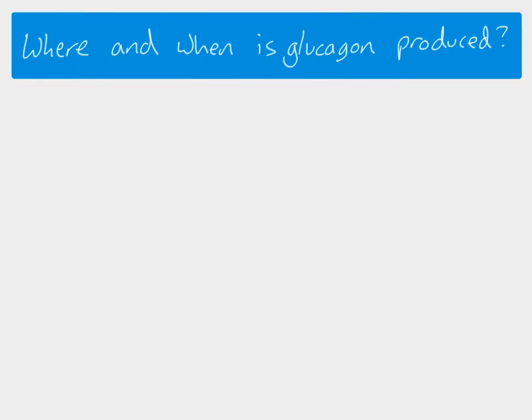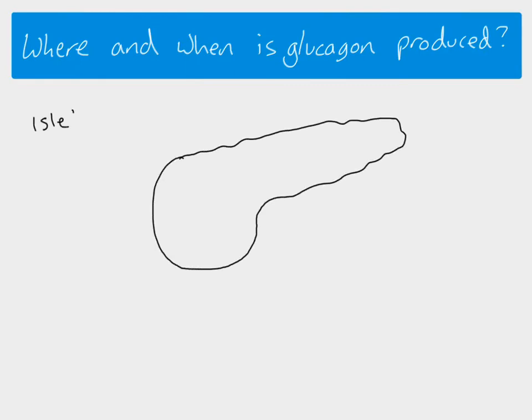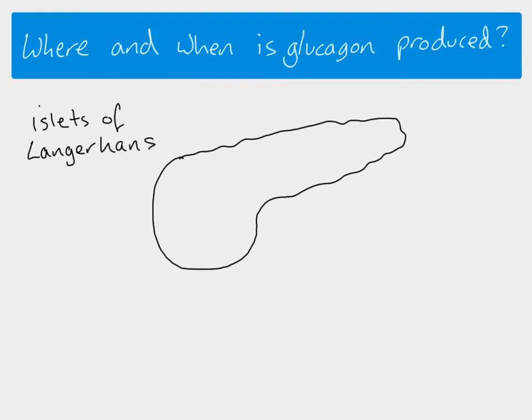Glucagon is produced in the pancreas, specifically in the islets of Langerhans, which are found throughout the pancreas. Glucagon is produced in the alpha cells of the islets of Langerhans. The beta cells are where insulin is produced.